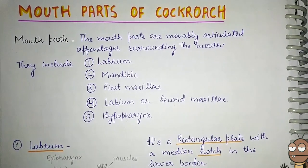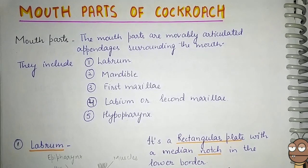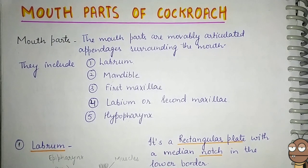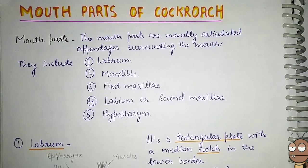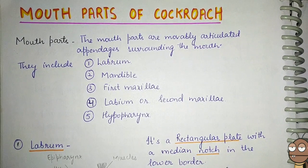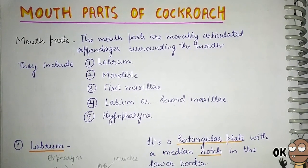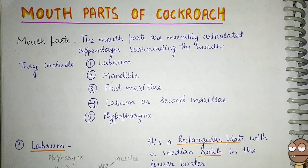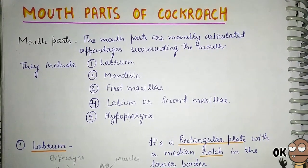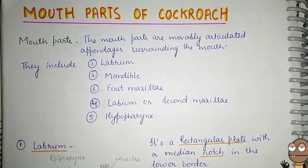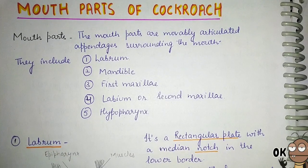The cockroach feeds on bread, rotten fruits, vegetables, paper, cloth, leather, and even dead bodies of animals. In order to cut and process all such food and make it reach the mouth, certain appendages are present above the mouth in the pre-oral cavity. They are known as the mouthparts.